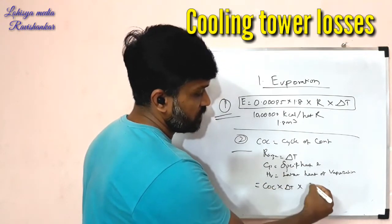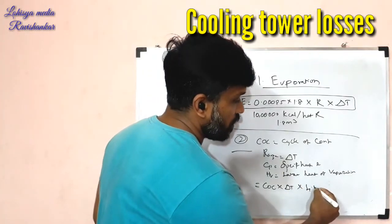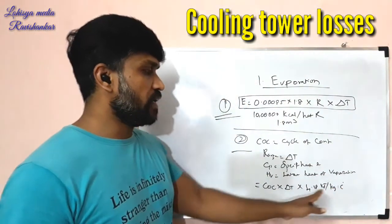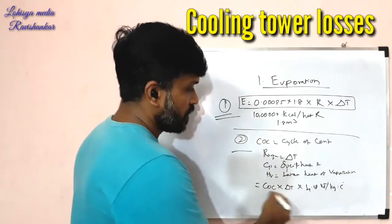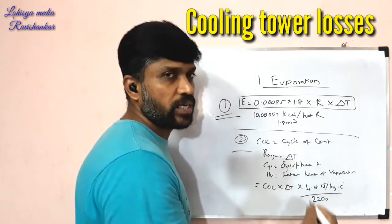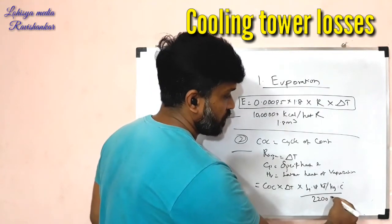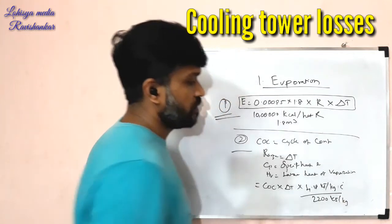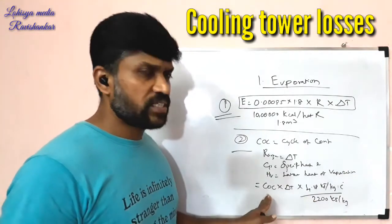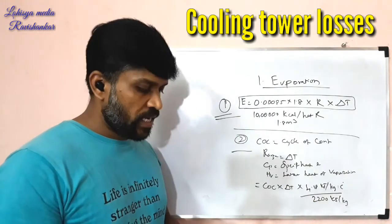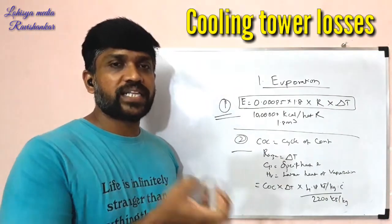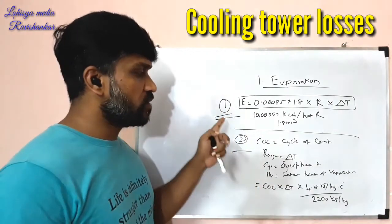CoC range, into Cp (specific heat of water) — this water value is 4.18 kJ per kg per degree centigrade. That is the basic heat of water. Divided by HV, the latent heat of vaporization, which is 2200 to 2260 kJ per kg. This is the HV value used with CoC and the range to calculate how much water will evaporate for a given heat rejection.